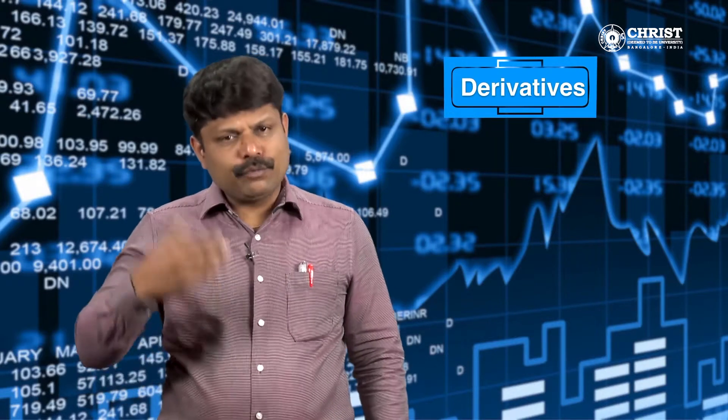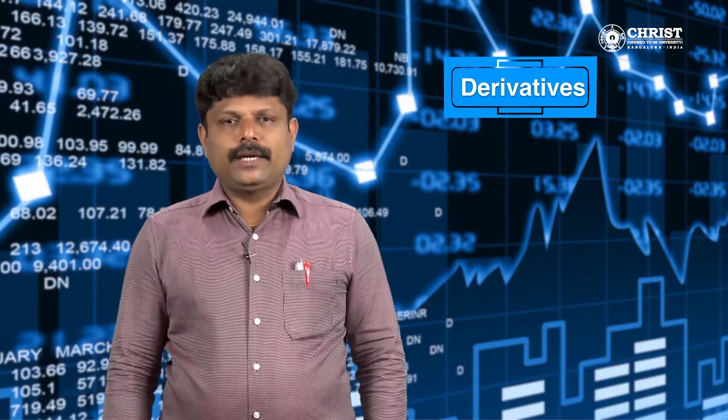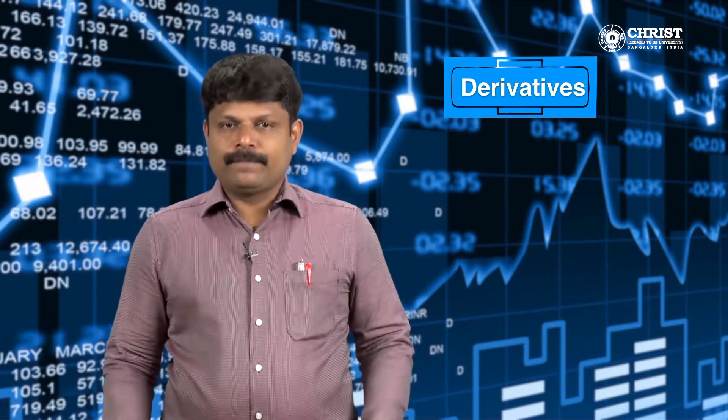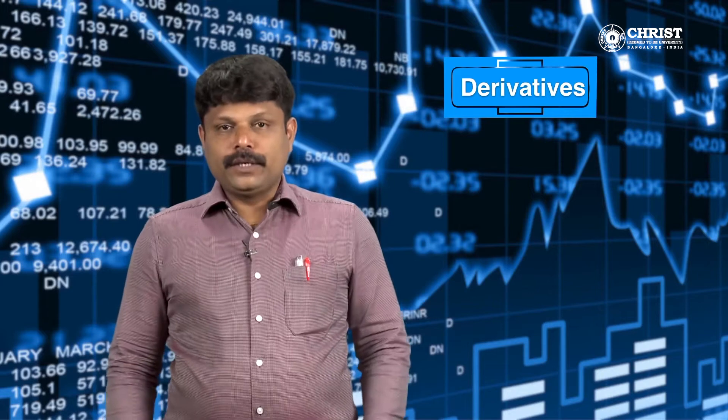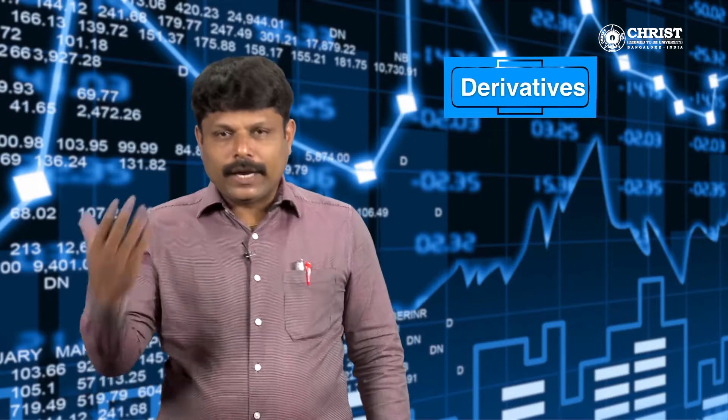If the spot price after three months is rupees 540, then he need not worry because he has entered a futures contract to sell at rupees 590. If this contract were not available, he could have sold at the price of rupees 540, which means he could have incurred a loss of 50, that is 590 minus 540.